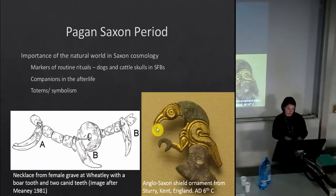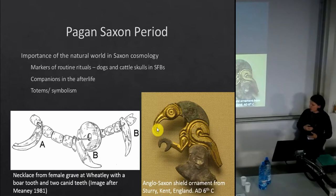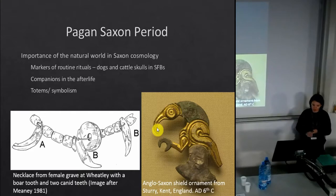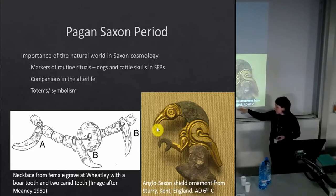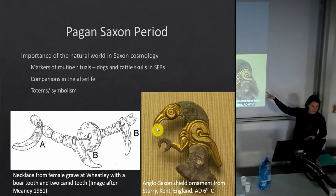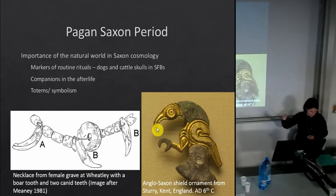Lastly, in the Saxon period animals are also used as totems or symbols of power — a particular feature of the animal that can be transferred to the wearer. Here we have a necklace with teeth from a wild boar, two dogs, and here a raptor used as a shield ornament, presumably transferring ideas of strength and power onto the wearer of that shield.